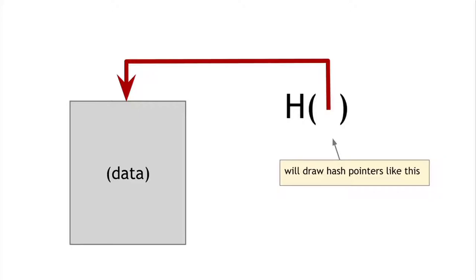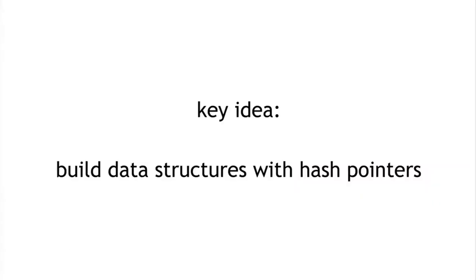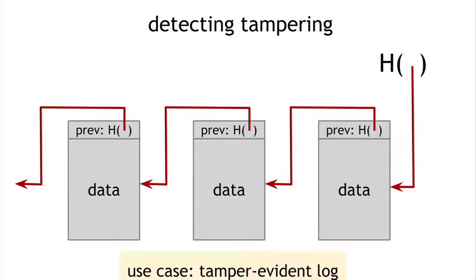We'll draw a hash pointer as 'H()' with an arrow pointing to something. We can use hash pointers to build all kinds of data structures — take any data structure like a linked list or binary search tree and implement it with hash pointers instead of regular pointers. For example, here's a linked list built with hash pointers — a data structure we'll call a blockchain. Just like a regular linked list, each block has data and a pointer to the previous block, but here the previous-block pointer is replaced with a hash pointer that says where it is and what the value of the previous block was. We store just the head of the list as a regular hash pointer.